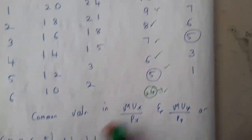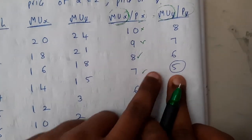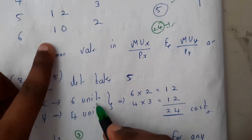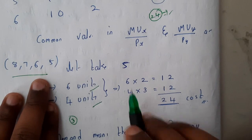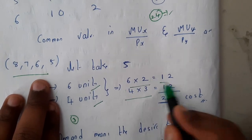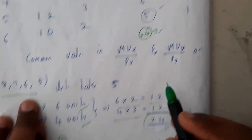Similarly, we have 5 here, so Y is 4 units. The cost of X is 2 and Y is 3. We get 12 plus 12, exactly 24. Please try for another also.